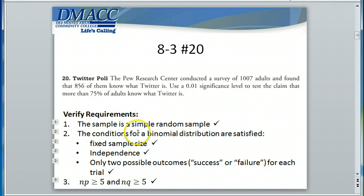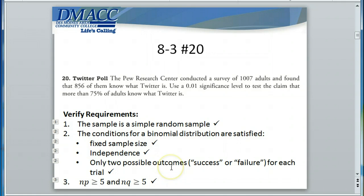You should verify these requirements. Next, the conditions for a binomial distribution must be satisfied: we chose a fixed sample size of 1,007 adults. Next, we need independence between adults — that one adult isn't going to affect the likelihood that any other adult knows what Twitter is, and assuming we chose our adults randomly, we would have that independence. Finally, only two possible outcomes are possible with each trial: every time we ask an adult, either they say yes, I know what Twitter is, or no.